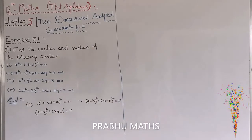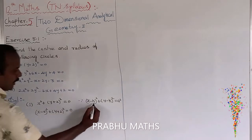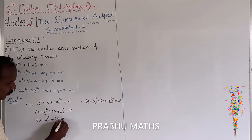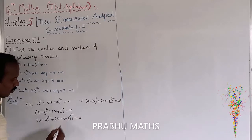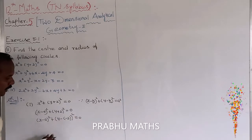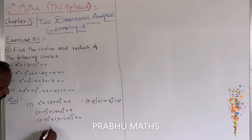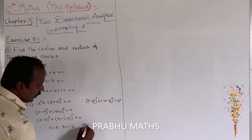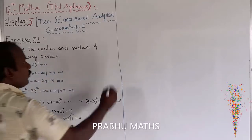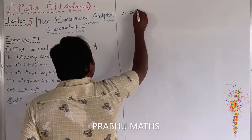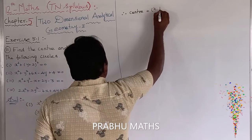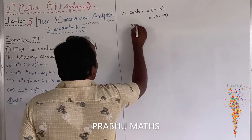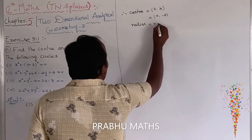Now to find the values: x minus 0, the whole square, plus y minus (minus 2), the whole square, equals 0. Comparing with x minus h, the whole square, plus y minus k, the whole square, equals r squared: h equals 0, k equals minus 2, and radius r equals 0. Therefore, center equals (h, k) equals (0, minus 2), and radius equals 0.